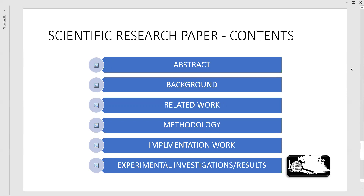The most important part — the heart of the scientific research paper — is the results and experimental investigations. These investigations are carried out with respect to a dataset, which might be a public dataset or one taken from private laboratories or populations. The analysis must be in two parts: subjective and objective. Subjective means a descriptive explanation, whereas objective means discussing things in the form of statistical analysis, that is, parametric or feature-attribute wise.